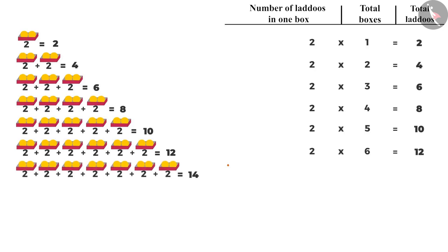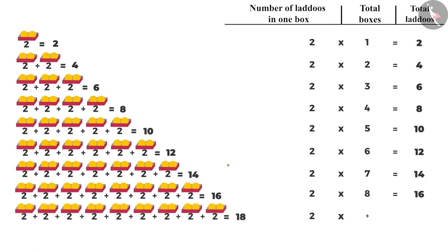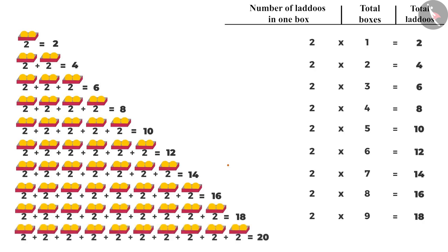Number of ladoos in seven boxes will be two multiplied by seven, that is fourteen. Number of ladoos in eight boxes will be two multiplied by eight, that is sixteen. In nine boxes, it will be two multiplied by nine, that is eighteen. And the number of ladoos in 10 boxes will be 2 multiplied by 10, which comes to 20.